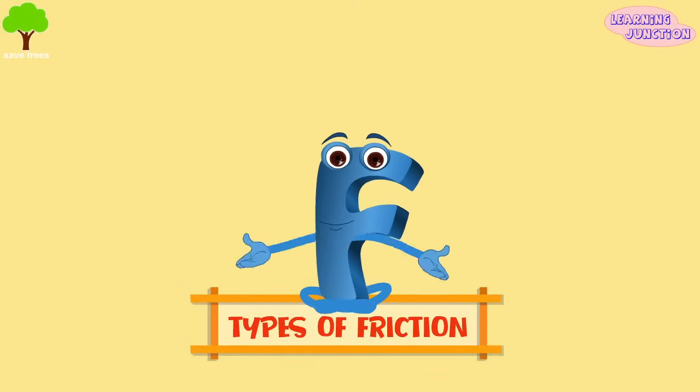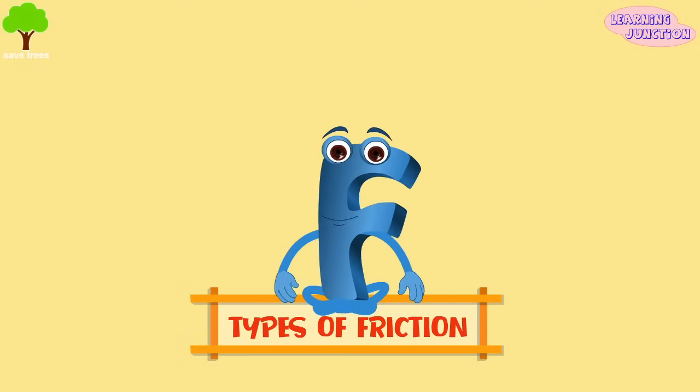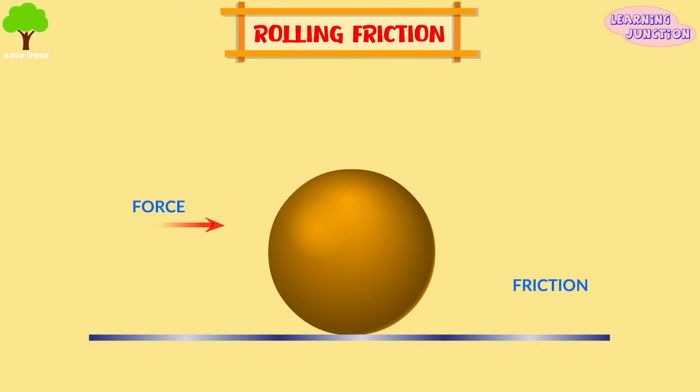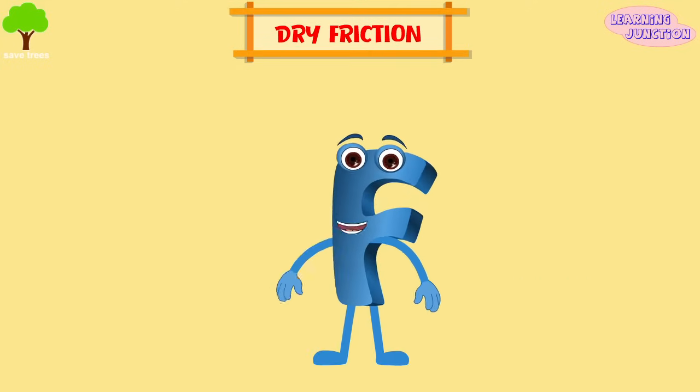Now we know what friction is. Let's learn about types of friction. Rolling friction occurs when a round surface like a ball or wheel rolls over a surface. Dry friction is a force that opposes the relative lateral motion of two solid surfaces in contact.